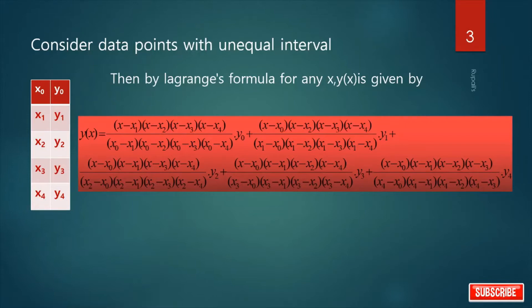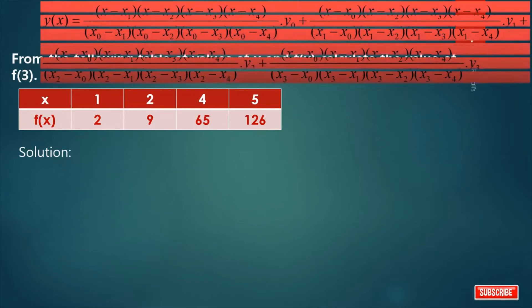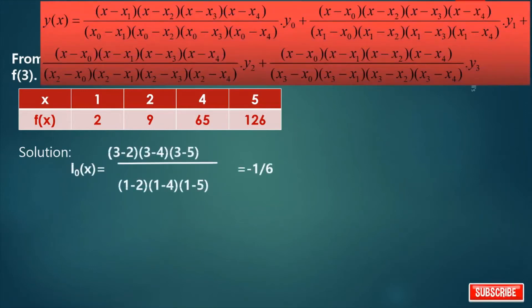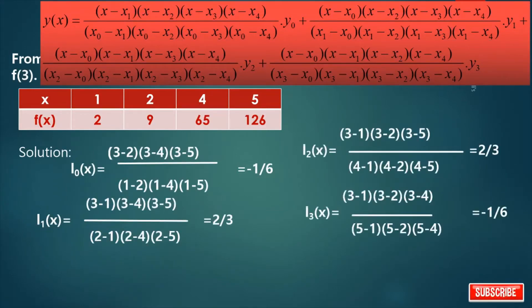This is the Lagrange interpolation formula and we already solved this math. The mathematical problem was: from the following table of values of x and f(x), calculate the value of f(3). This is the formula for Lagrange's interpolation method. First, I have to calculate L0(x), then L1(x), then L2(x), and then L3(x). We already discussed this math in our previous video — please consult it.